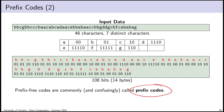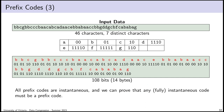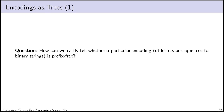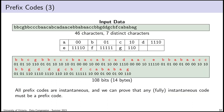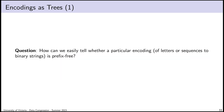All prefix codes are instantaneous, and it turns out any instantaneous code must be a prefix code — so they're synonyms. I prefer 'prefix-free code' as more descriptive, but we'll use 'prefix code' as that's standard. How can we tell if an encoding table is prefix-free? A brute-force approach is to loop over all pairs of symbols and compare encodings. But I want a cleverer way — and it's an excuse to talk about binary trees, which I love.